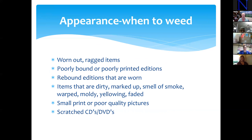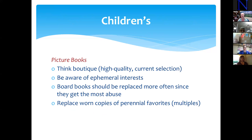Appearance — worn out, ragged, things that are poorly bound, poorly printed. Paperbacks: when the paper starts turning yellow, that's acid turning and you need to get those out because they will ruin other books. Items that are dirty, marked up, smell like smoke. Recently, because of California and Colorado, they're trying to figure out how to get rid of tobacco smoke in books, but they don't know how to get rid of marijuana smoke — quite a conundrum. Are they warped, moldy, yellowing, or faded? Is the print too small or the pictures horrible? Scratched CDs and DVDs? Audiobooks with things missing?